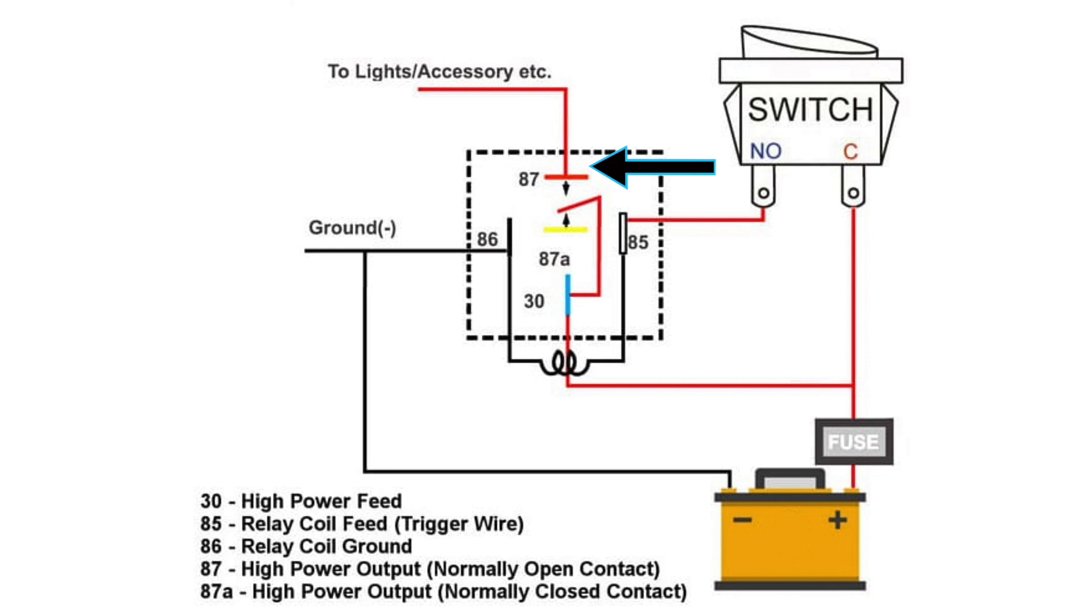Pin 87 is used when your circuit is run normally open, as in when the bike's resting the relay is open and not conducting power. In the opposite of that you could send your power out of 87A which would be for a normally closed circuit. For our application we'll be using circuit 87 because we want the relay to be open when the bike's off and we want it to be closed when it gets a signal from pin 85 to turn on the relay and turn on the power to the accessory.